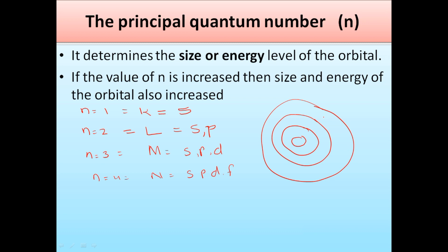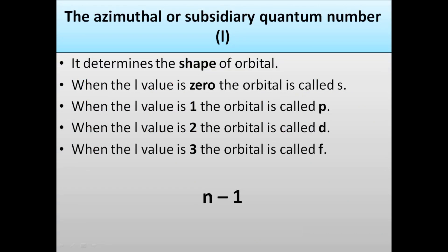Greater the size of the shell, the greater the amount of energy present in it. The most stable orbital is the one having the lowest amount of energy, which is always nearest to the nucleus. The nucleus keeps it bound due to having the smallest amount of energy and smaller size. So greater the size, greater will be the energy. Now we have another quantum number — the azimuthal quantum number, denoted by l.